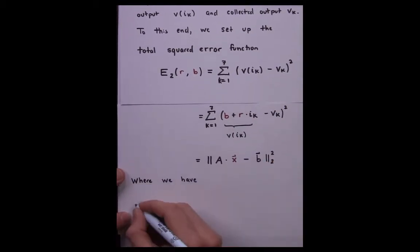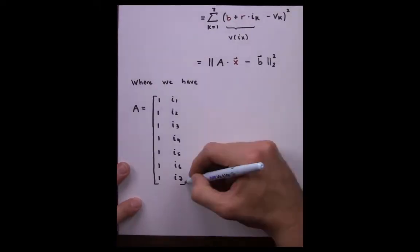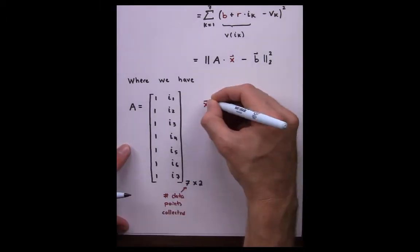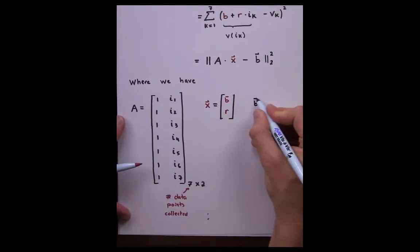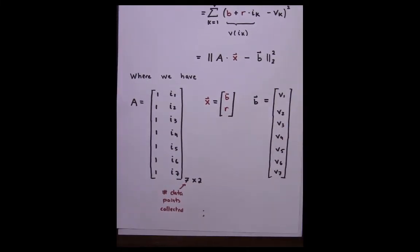In this case, we have that A is the Vandermonde matrix that has seven rows and two columns, seen here. Here, X is the matrix with the coefficient B and R in its entries, and the right-hand side vector B is the set of all voltage output.